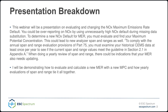This is a presentation on evaluating and changing the NOx maximum emissions rate default. Why that's important: you could be overreporting on NOx by using unnecessarily high defaults during missing data substitution. I recently did a project for a customer and realized I didn't necessarily know the correct way to do it based on the monitoring plan instructions. The correct way to determine your NOx default for MER, you must evaluate and find a new MPC — maximum potential concentration. What this could then lead to are new span and ranges, so there are a few different things that go into this. You can't just find the new MER and say, okay, this is my new default. It's a little more involved than that.